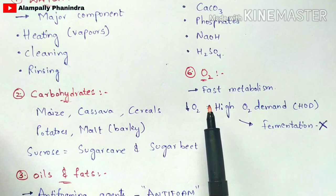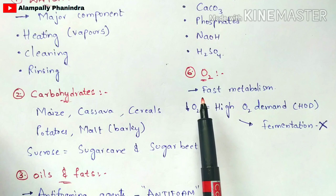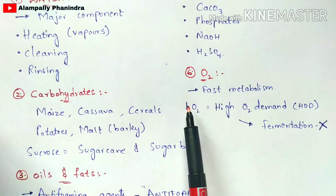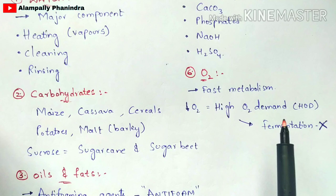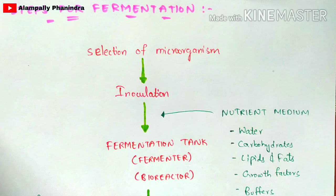The sixth component is oxygen. Oxygen plays a major and vital role in fermentation — without it, the process will not proceed. Oxygen is used for the first stage of metabolism to obtain the product. If low oxygen is injected through the inlet, high oxygen demand (HOD) will occur inside the fermentation tank, and the fermentation process will not be completed.